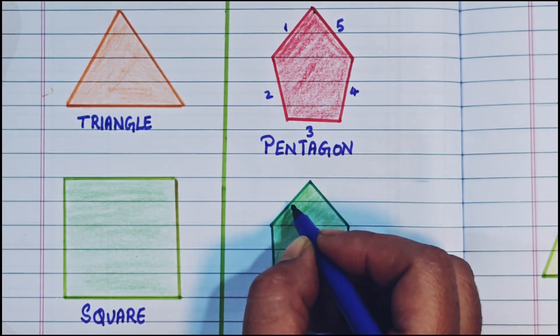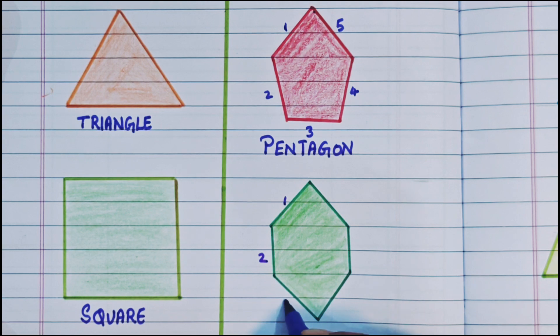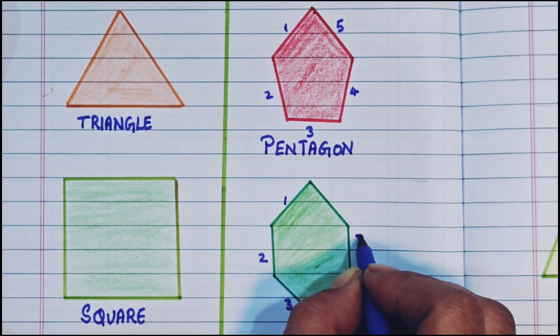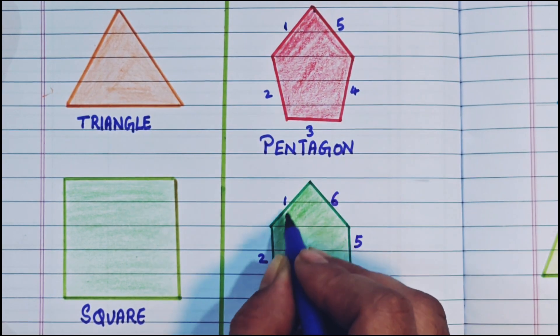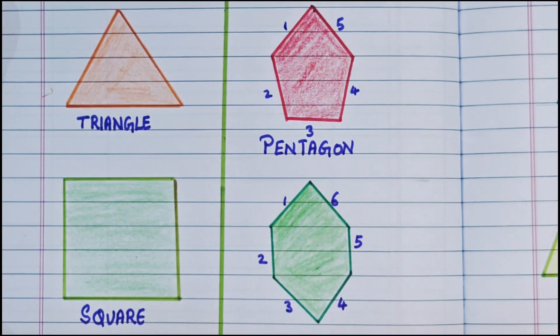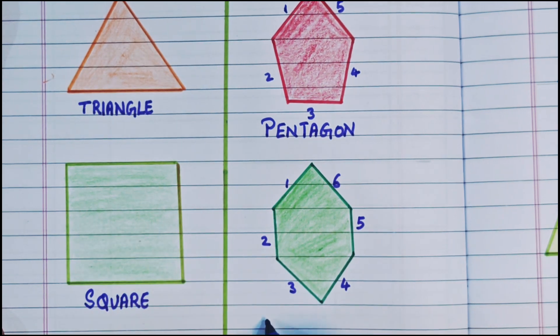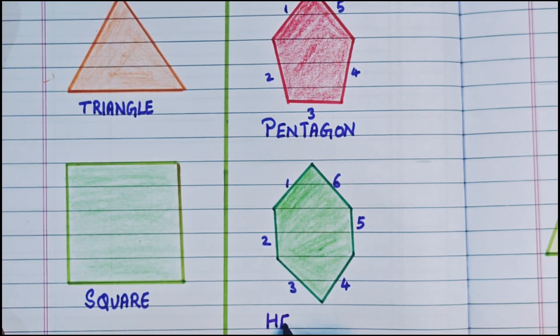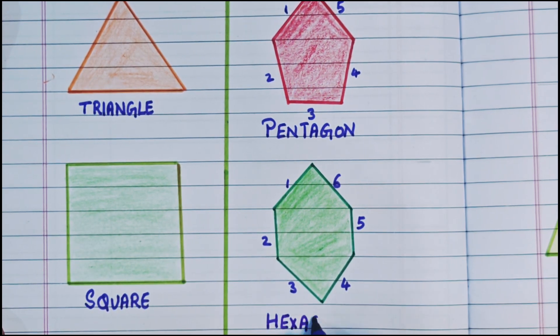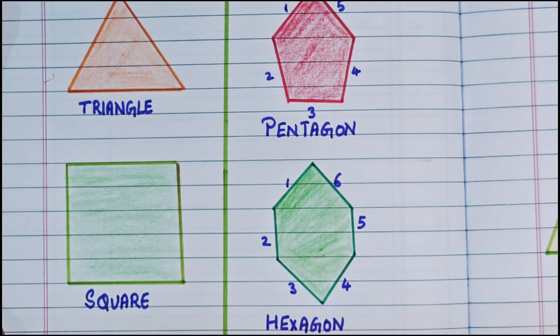Now next shape. Here it has 6 sides: 1, 2, 3, 4, 5, and 6. And it has 6 corners: 1, 2, 3, 4, 5, 6. So when it has 6 sides, it is known as a hexagon. H-E-X-A-G-O-N. Hexagon. It has 6 sides and 6 corners.